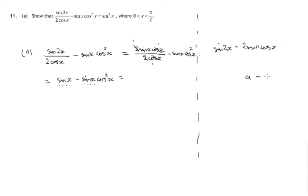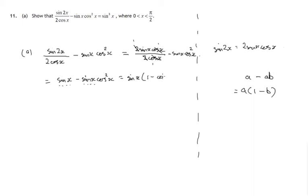If we take an example, a minus ab — a common factor comes out of that. It's a similar situation here. We can take sine x out as a common factor and it leaves 1 minus cos squared x.